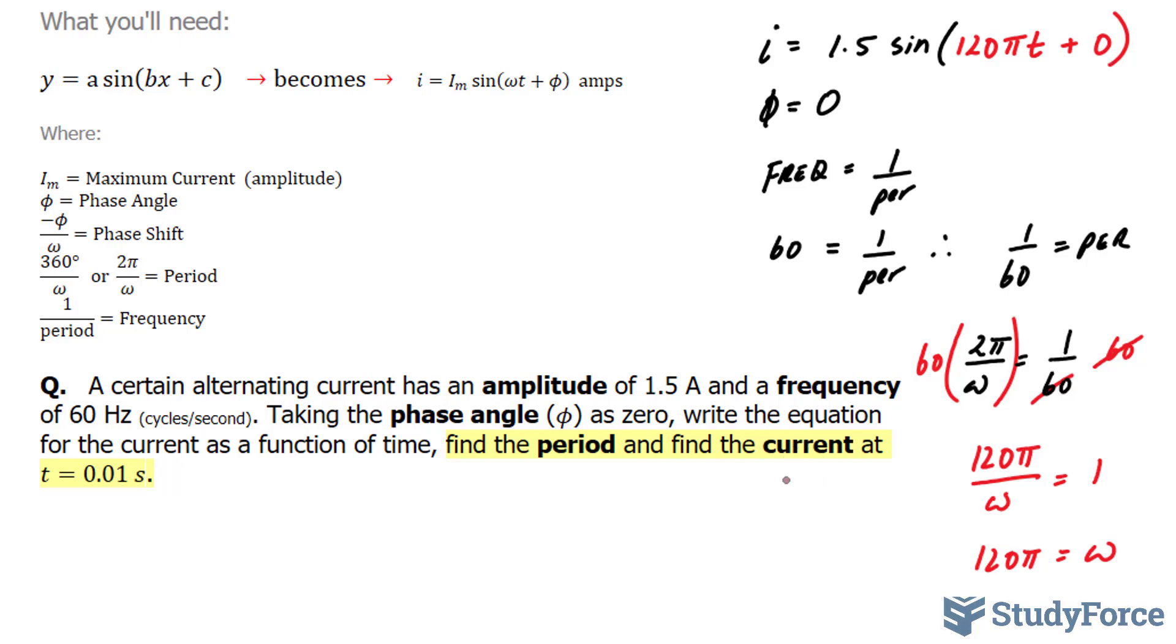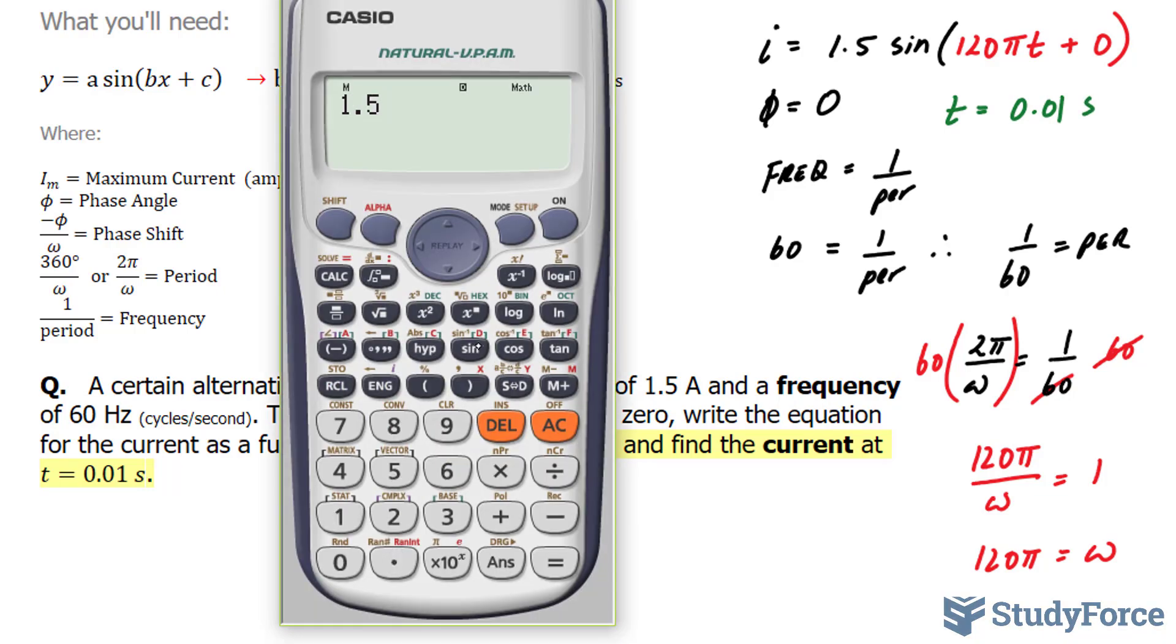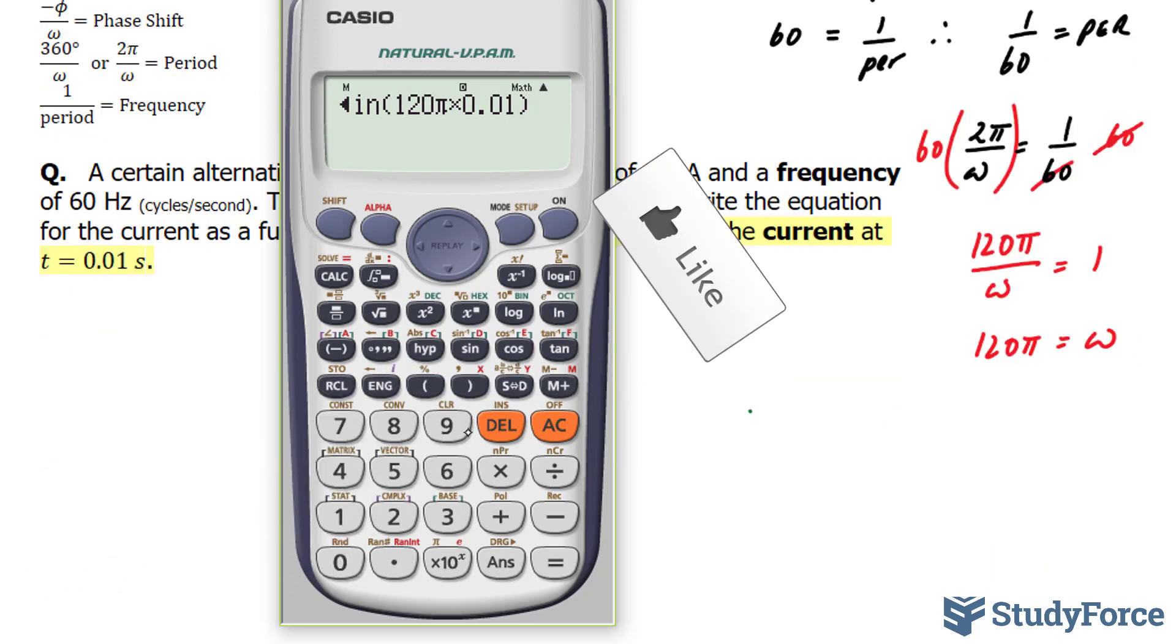So let's go ahead and do that. Let's substitute t is equal to 0.01. And using our calculator, 1.5 times sine, 120 pi times 0.01. Now, before you press equal sign, make sure that your calculator is in radians.